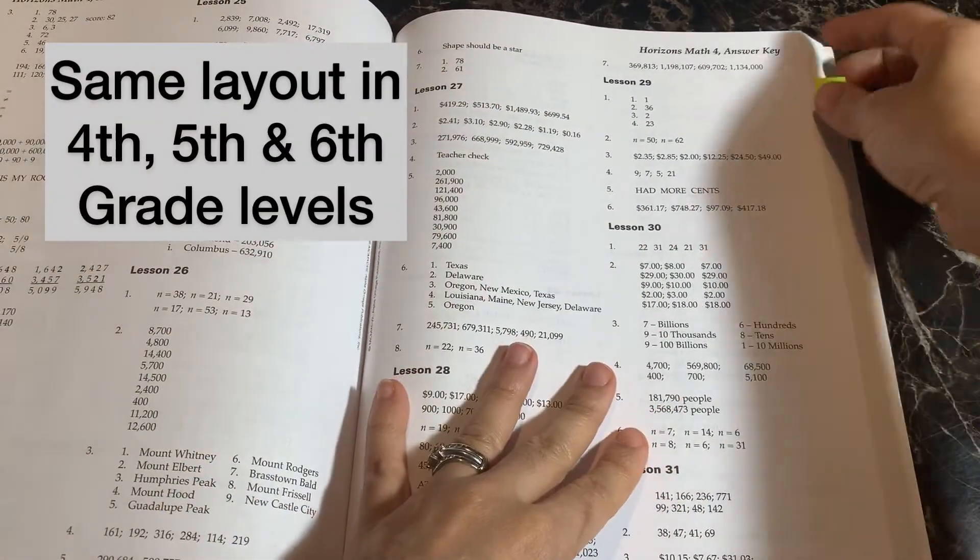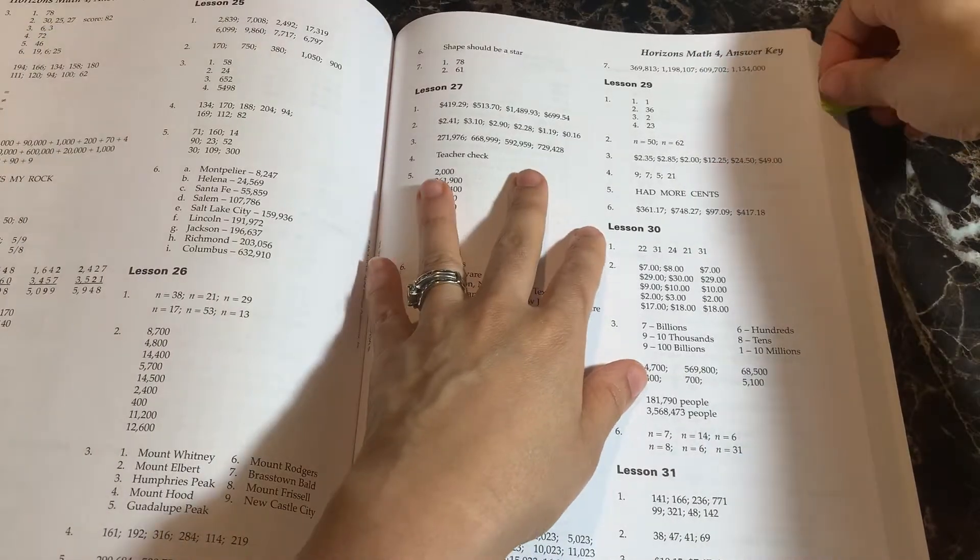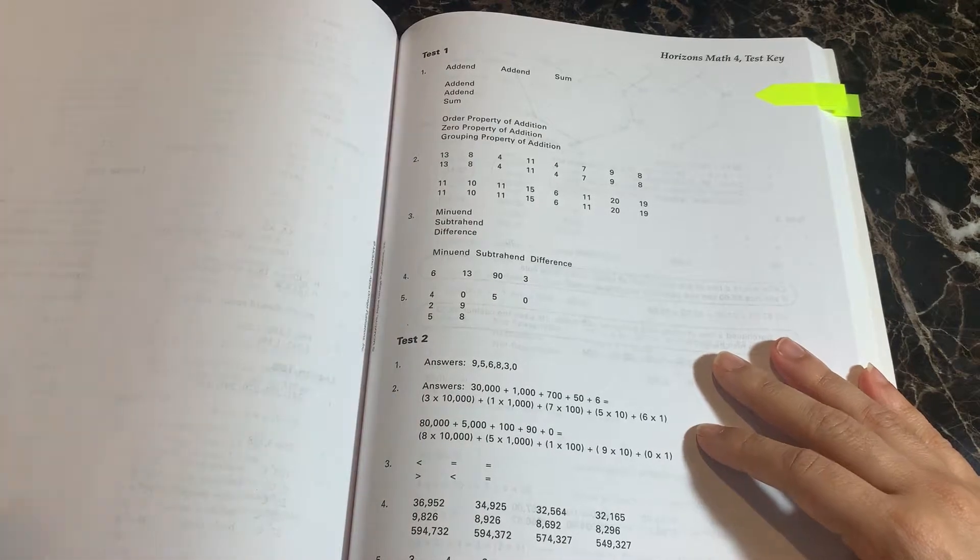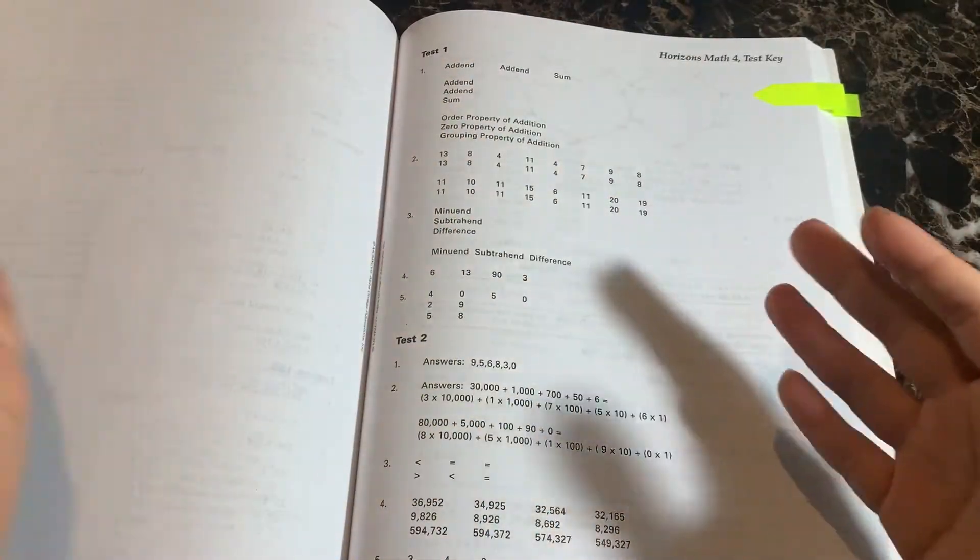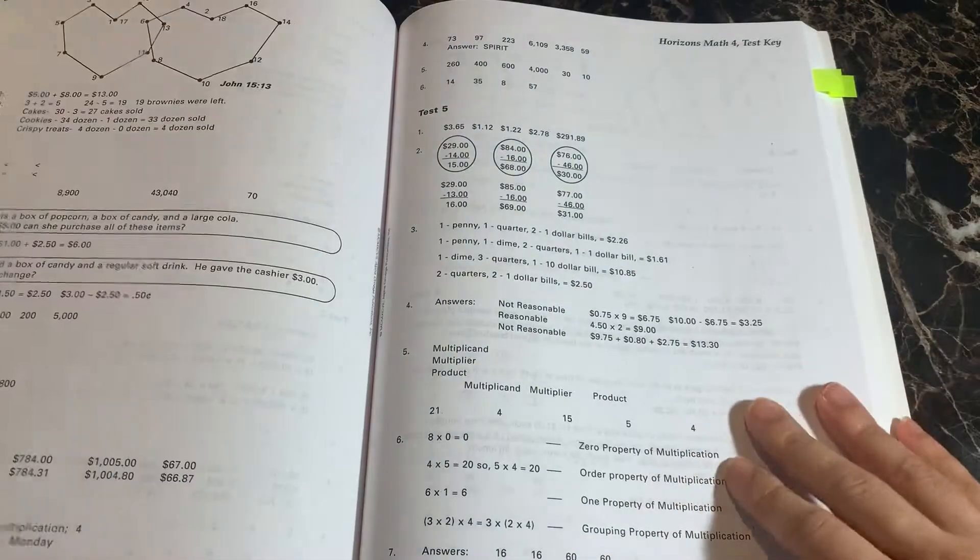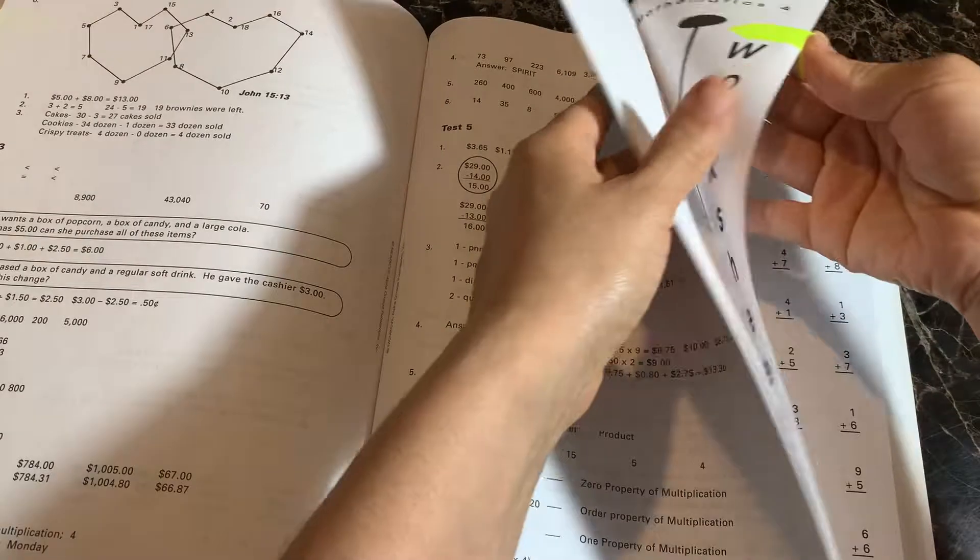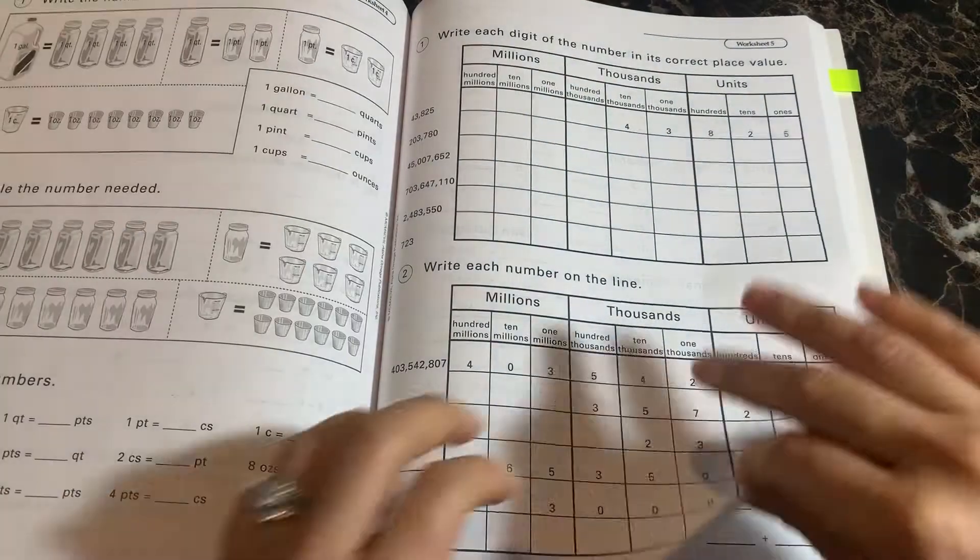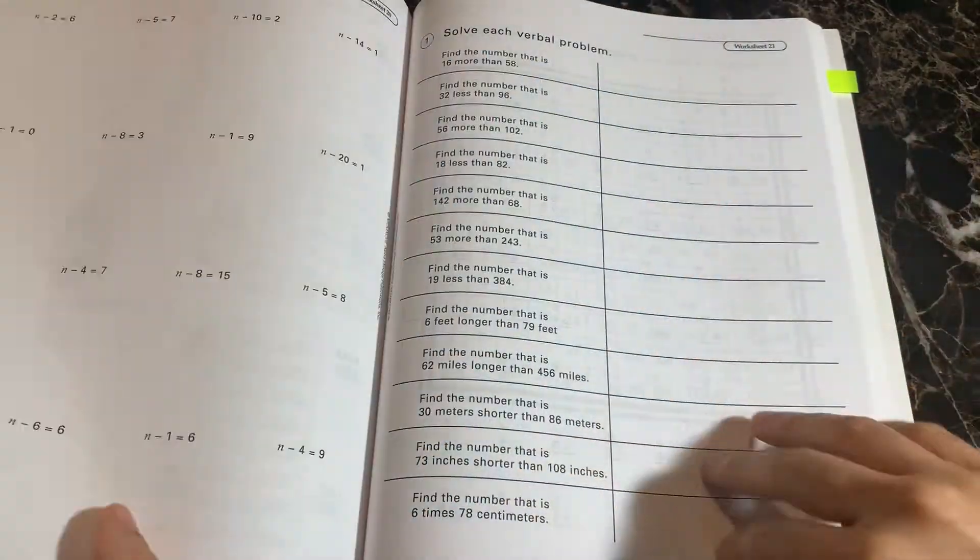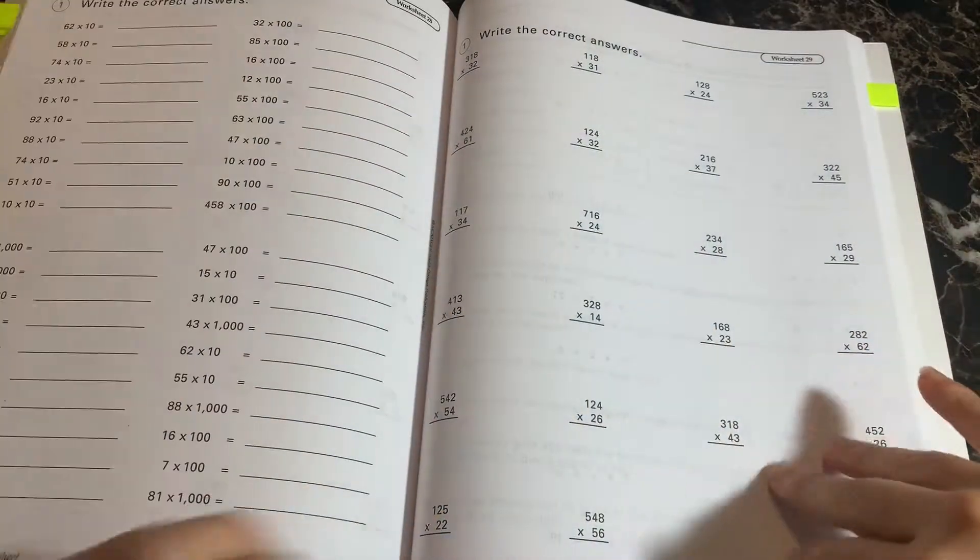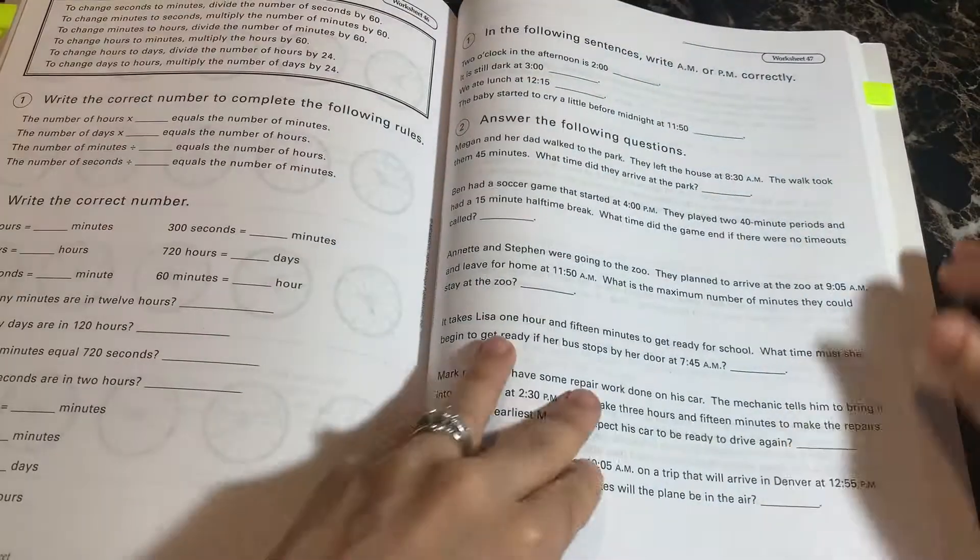So again, it just has kind of the answers numbered, which is different. And this is the way it is for fourth, fifth, and sixth, in those levels. So another difference is in this section, the test key is separate from the work book key. So in the third grade level, it was all kind of together in order, kind of as a test came here, you have your test answers separately. So here are the answers to test one, two, and it kind of goes up. So you have a separate test key. So that is another difference. Here's a quick look inside the worksheets for fourth grade. Again, very similar, laid out in the same way.